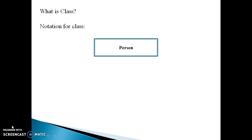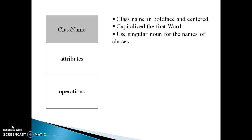This is a simple notation of a class. The class is shown using a rectangular box. If you want to declare a class with name, attribute, and operation, then the rectangular box is divided into three compartments.